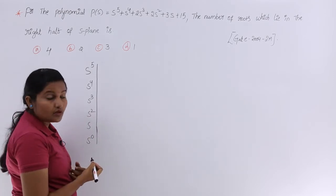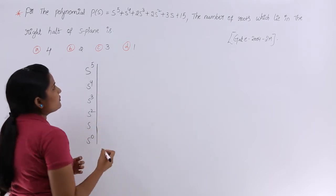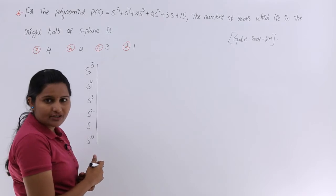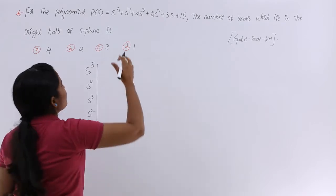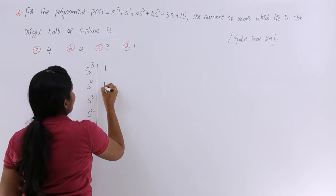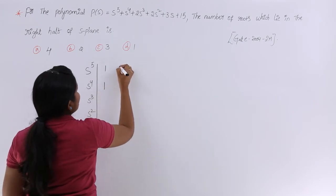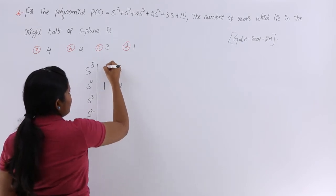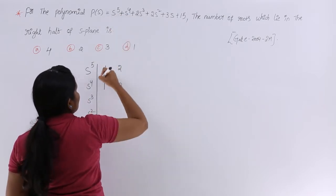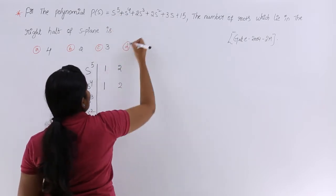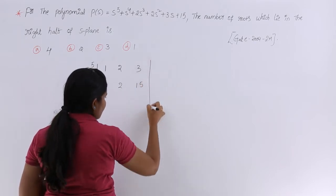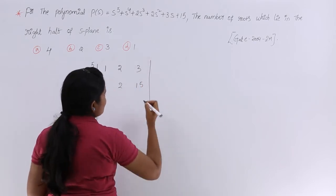The first two rows of the Routh array are filled by the coefficients of the characteristic equation. The coefficients are: for row S⁵: 1, 2, 3; and for row S⁴: 1, 2, 15. Fill them as A1, A2, A3, A4, A5, A6 — that is 1, 1, 2, 2, 3, 15. Once all coefficients are entered, you can close those two rows of the Routh array.